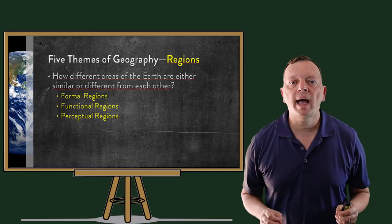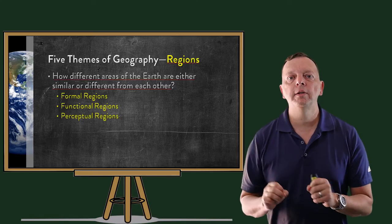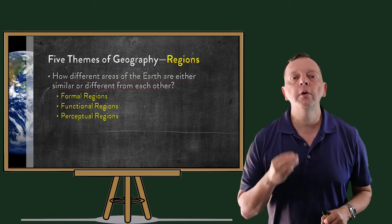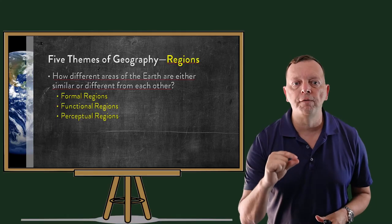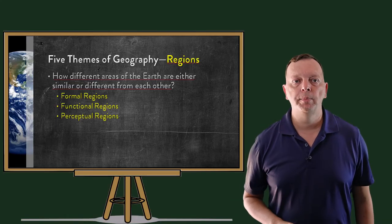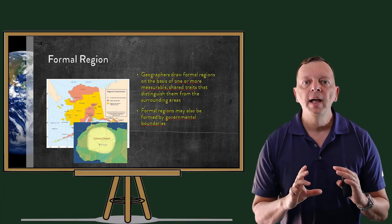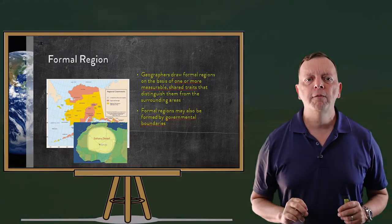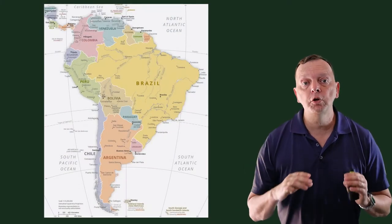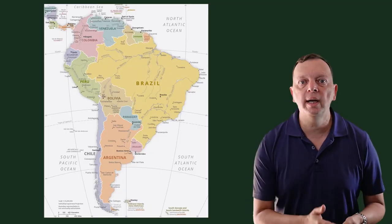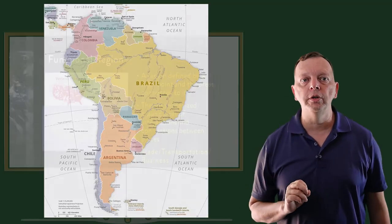Then there are regions. Regions ask: how is this area different or similar from another area? And there are three types of regions: formal, functional, and perceptual. A formal region is defined as a connected area that has one or more measurable characteristics. For example, the Sahara Desert is a formal region because within that desert it shares all the same types of characteristics. A formal region is also defined by official boundaries that have been drawn — country, state, county, and city borders are all formal regions.